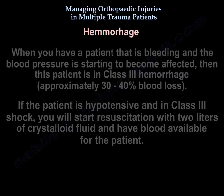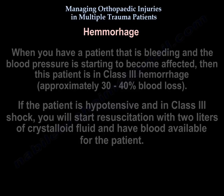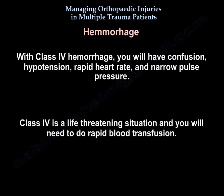Regarding hemorrhage: when a patient is bleeding and blood pressure starts getting affected, the patient is in class 3 hemorrhage. If the patient is hypotensive and in class 3 shock, start resuscitation with 2 liters of crystalloid fluid and have blood available. In class 4 hemorrhage, you will see confusion, hypotension, rapid heart rate, and narrow pulse pressure — class 4 is a life-threatening situation requiring rapid blood transfusion.